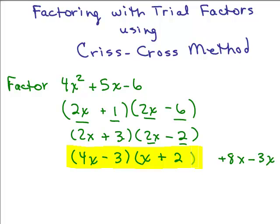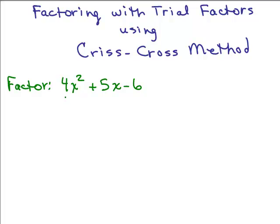Now we're going to do the problem using what I call the crisscross method instead. We're going to start out with 4x squared plus 5x minus 6. We're going to take the first coefficient and then the constant term — so the 4 and the negative 6.